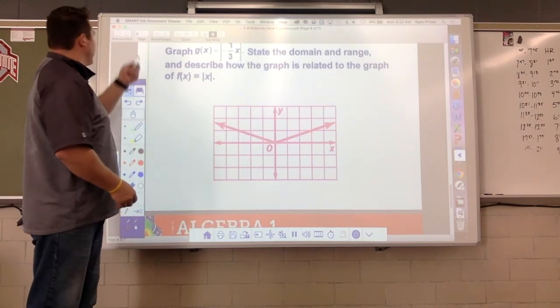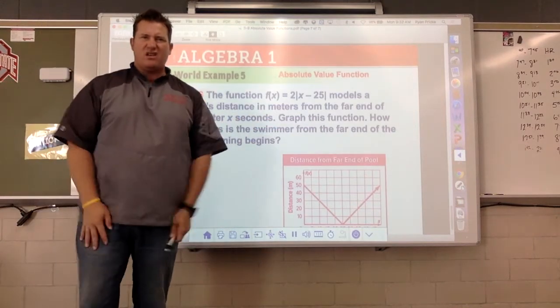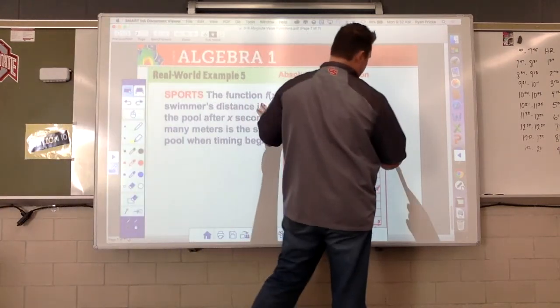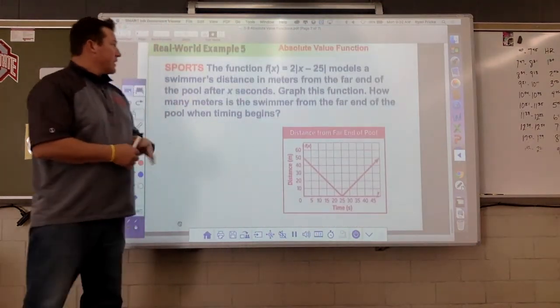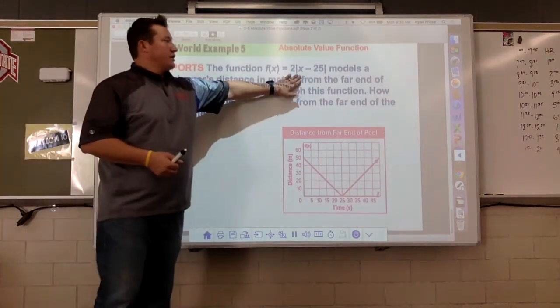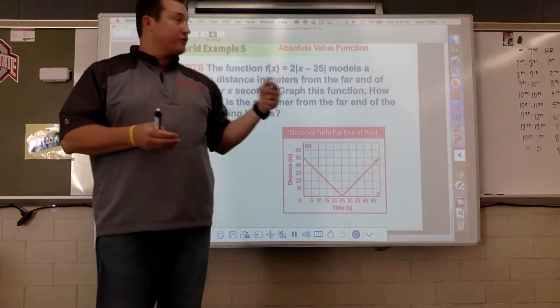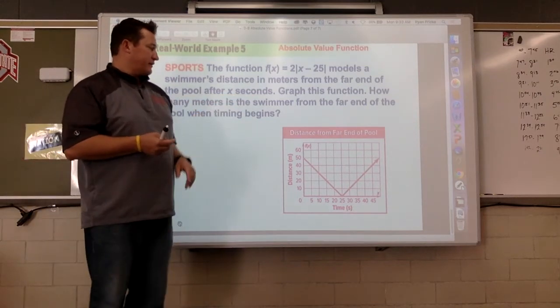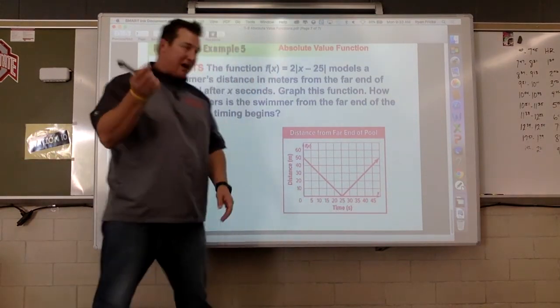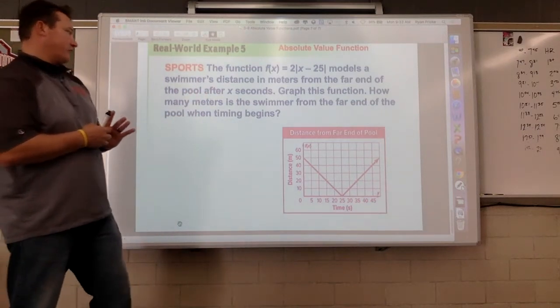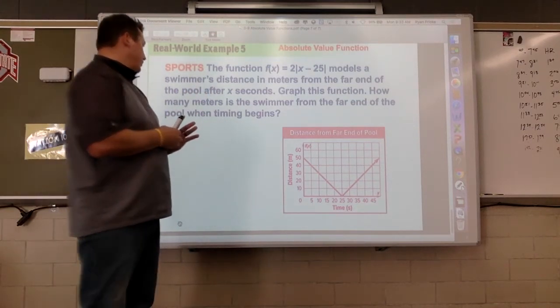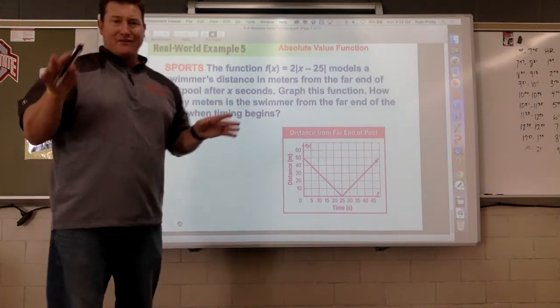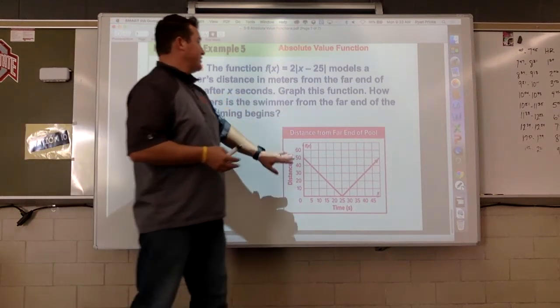What's wrong with you people? Good news guys, this is like our last one of the day here. It says the function, here it is, two times the absolute value of x minus 25, models a swimmer's distance in meters from the far end of the pool after x seconds. So here is our distance in meters, here is our time down here from the far end. How many meters is the swimmer from the far end of the pool when the timing begins? Is that all they want to know? We're gonna add a few questions in here.